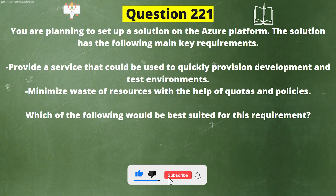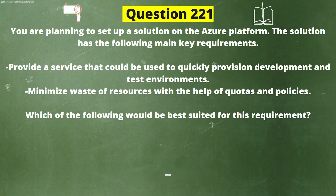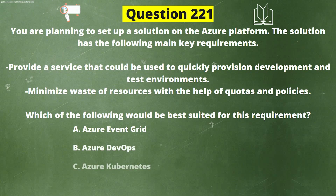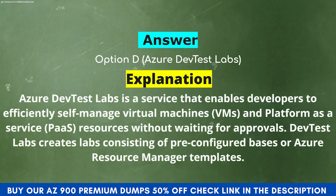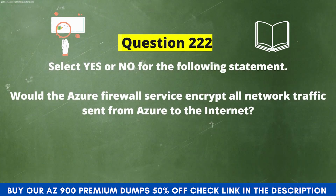Next question: You are planning a solution with these key requirements: quickly provision development and test environments, and minimize waste of resources with quotas and policies. Which of the following would be best suited? Option A: Azure Event Grid. Option B: Azure DevOps. Option C: Azure Kubernetes. Option D: Azure Dev Test Labs. The correct answer is Option D, Azure Dev Test Labs. This service enables developers to efficiently self-manage VMs and PaaS resources without waiting for approvals. Dev Test Labs creates labs consisting of pre-configured bases or Azure Resource Manager templates.